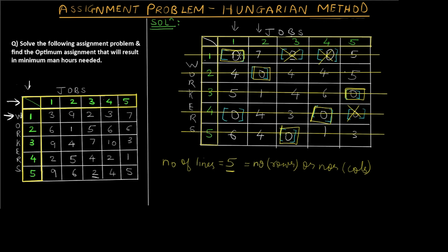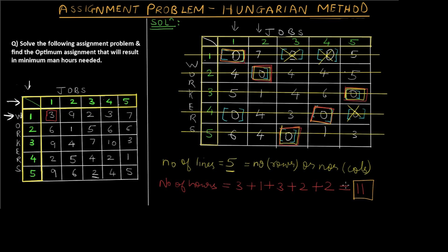Now we check the original matrix at each selected zero position. At position (1,3) the original value is 3. At position (2,2) the original value is 1. At position (3,5) the original value is 3. At position (4,4) the original value is 2. At position (5,3) the original value is 2. So the total is 3+1+3+2+2 = 11. The final answer is 11 hours, which is the minimum number of hours required for each person to perform exactly one job.